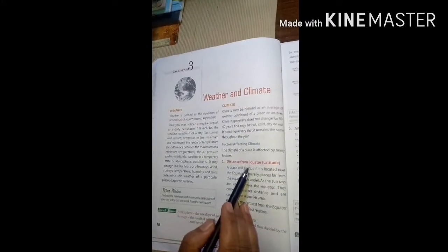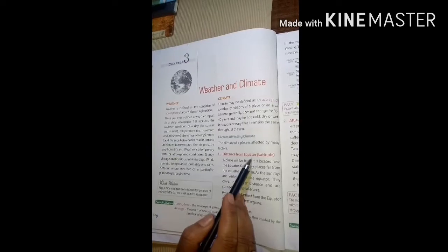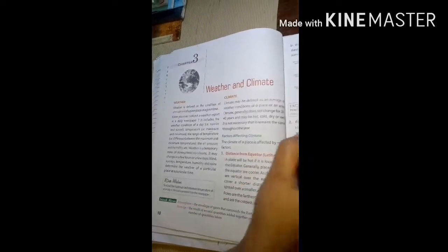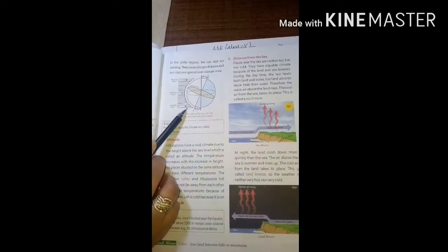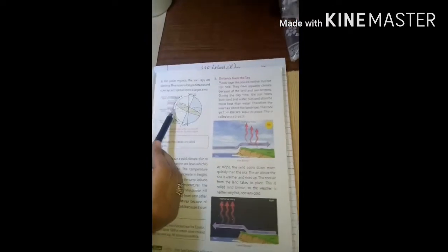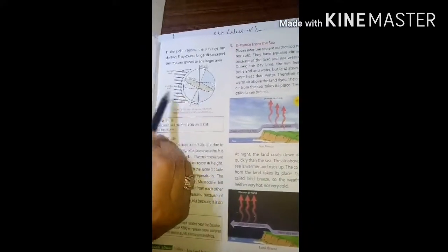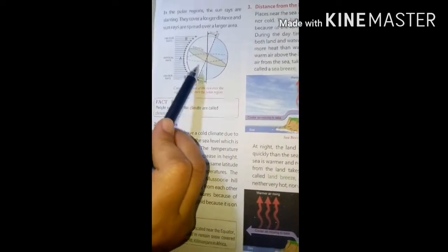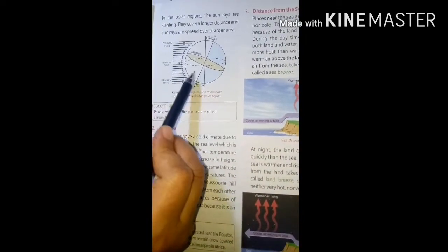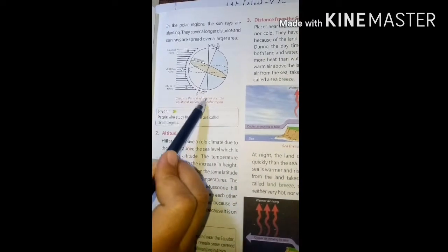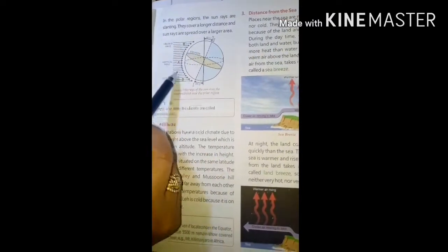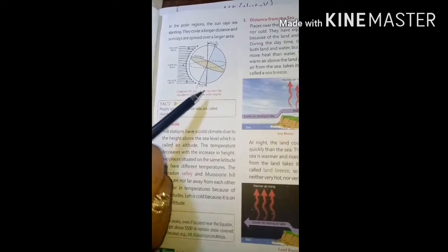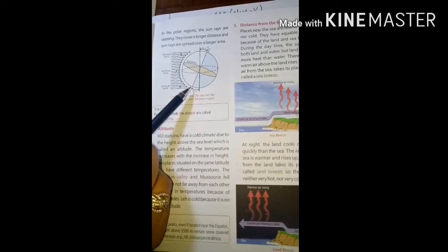First we will talk about distance from equator. Equator is a 0 degree latitude. If you look at this diagram here on page number 19, at the equator, the rays are direct and vertical. Therefore, the areas near to the equator will receive intense and direct heat. But towards the poles, rays are slanting and spread over a large area. That is why the areas near the poles are cold.